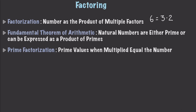Let's find the prime factorization of 8. Would it be 2 times 4? That does indeed equal 8, however we don't have prime numbers there. So what we want to do instead is use only prime numbers. That gives us 2 times 2 times 2, which equals 2 to the third. So the prime factorization of 8 is 2 to the third.